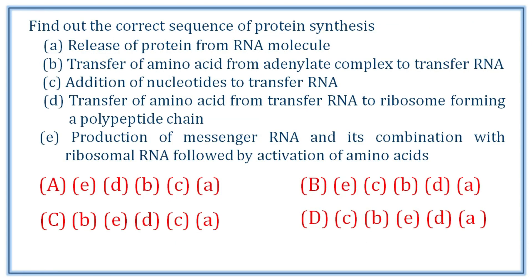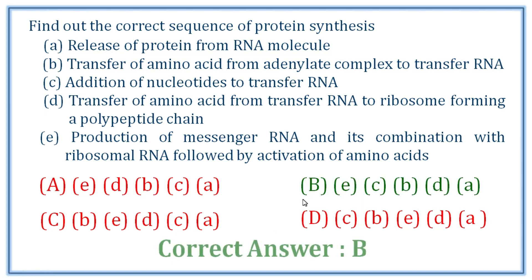Next question: find out the correct sequence of protein synthesis. First step: production of messenger RNA and its combination with ribosomal RNA, followed by activation of amino acids. Second step: addition of nucleotides to the transfer RNA. Third step: transfer of amino acid from adenylate complex to transfer RNA. Fourth step: transfer of amino acid from transfer RNA to ribosome forming a polypeptide chain. Last: release of protein molecule. Correct answer: B.